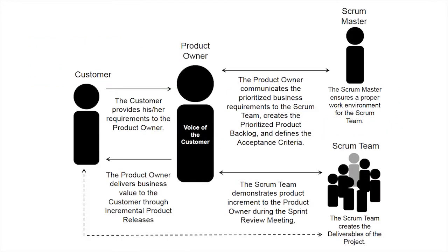Now, to help you understand how the Scrum organizational structure works, we have a diagram here. The roles played by the Scrum master, product owner, and Scrum team, their interrelation, and the way each one contributes to fulfilling customer requirements are summarized here. The organization aspect of Scrum also addresses the team structure requirements to implement Scrum in programs and portfolios.